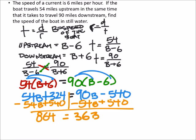Since I've got 36 times the speed of the boat, that would give us 864, so to solve this one we're just going to divide both sides by 36.